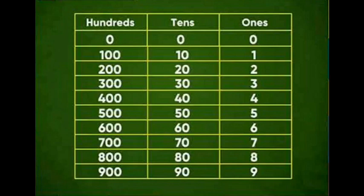In the 100's column: 0, 100, 200, 300, 400, 500, 600, 700, 800, 900. A 3-digit number is known as 100's.